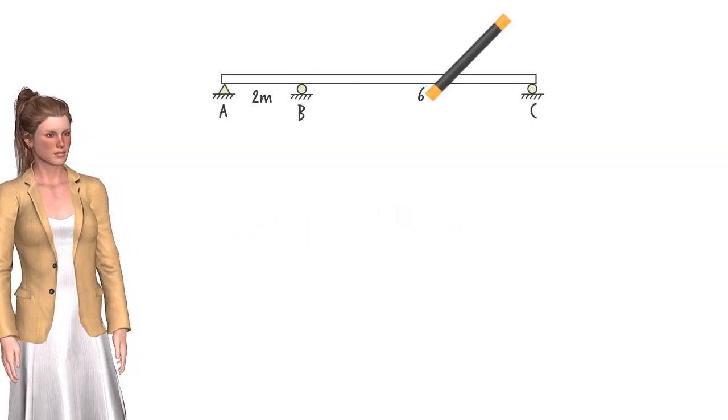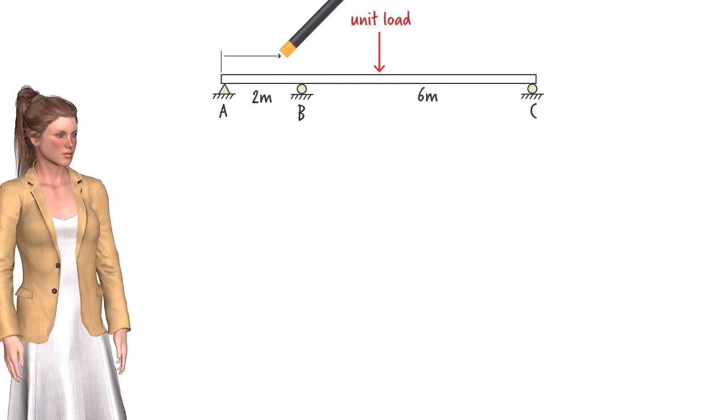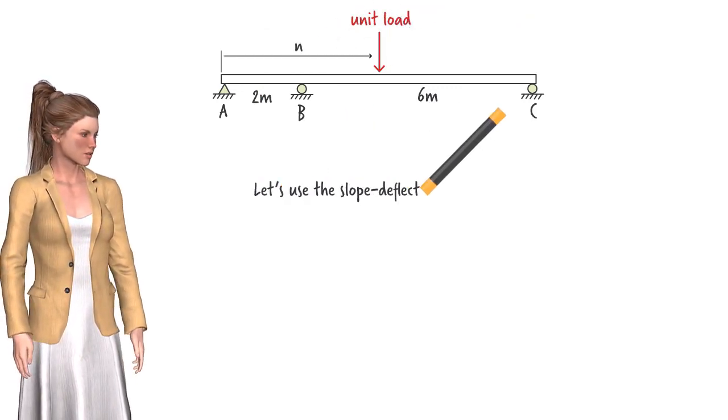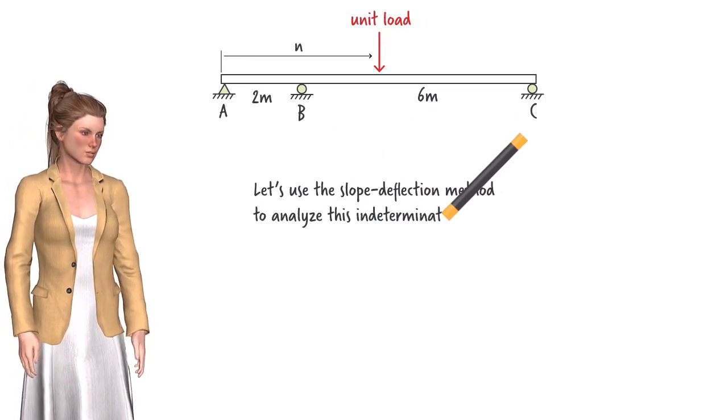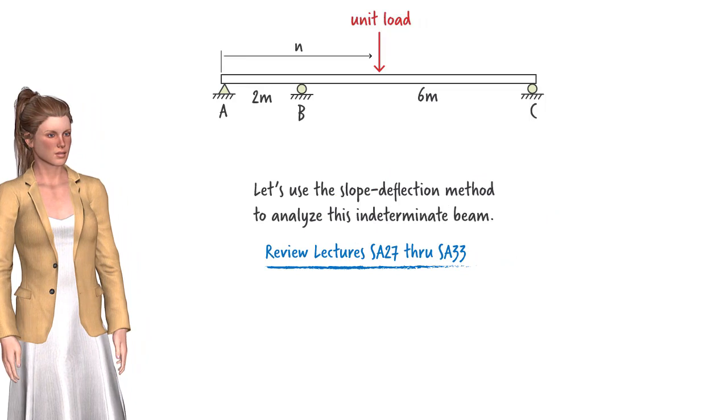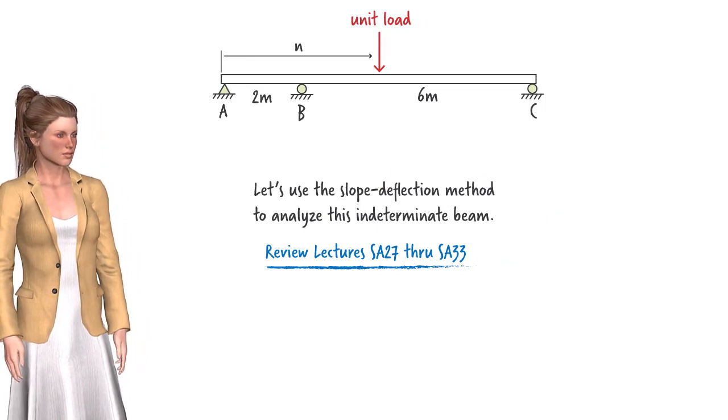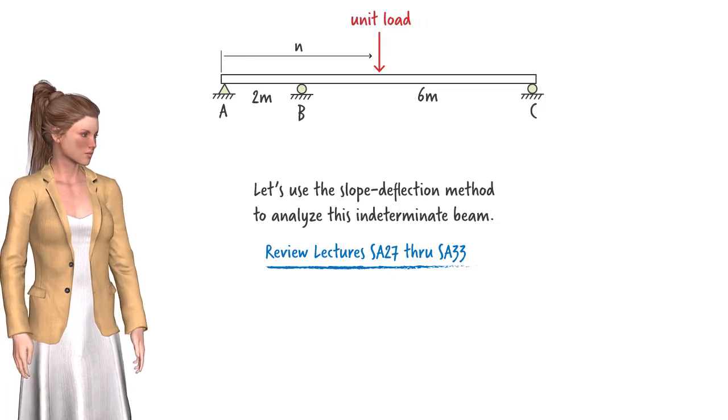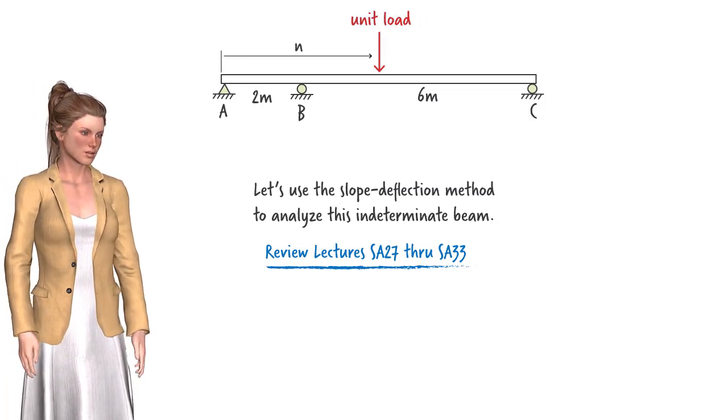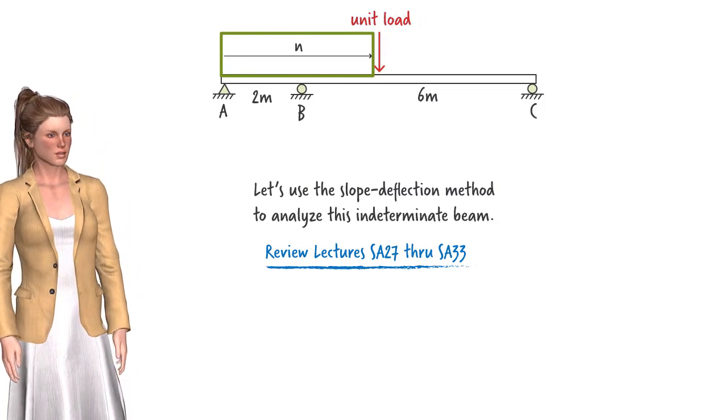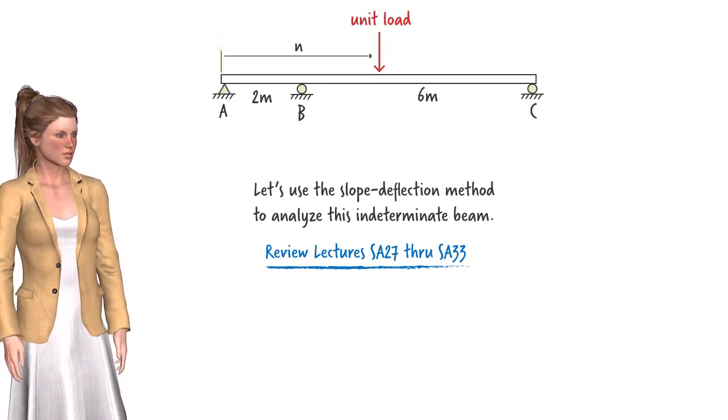Simple. We need to analyze the beam parametrically in terms of N using, say, the slope-deflection method. If you are not familiar with this method, please review lectures SA27 through SA33. Let's denote the position of the unit load relative to the left end of the beam as N. It varies from 0 to 8 since the overall length of the beam is 8 meters.